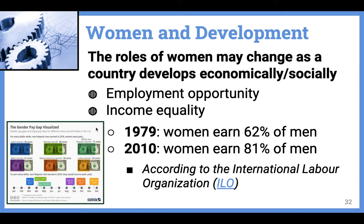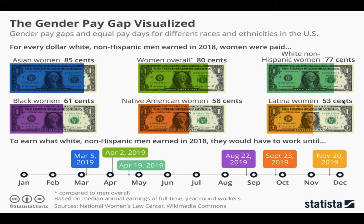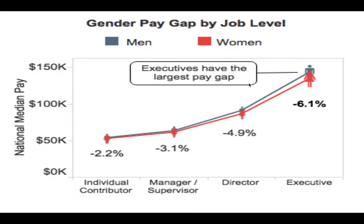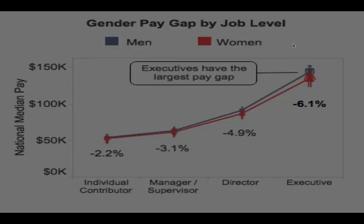One of the metrics commonly used to gauge not only development, but also gender equality in a country is income equality. For example, in the United States in 1979, women earned about 62% of what men earned. By 2010, that number had improved, but only to 81%. And if you look a little bit closer at that 81%, you'll see it's not the same for all women in the United States. As women get into upper management or executive level jobs, that gap only continues to expand.